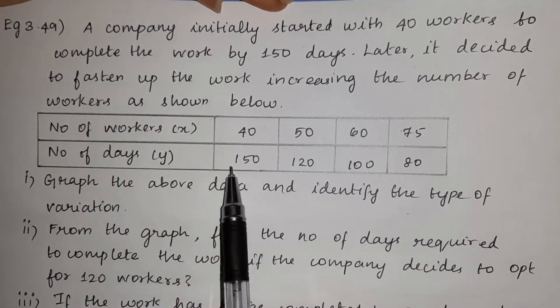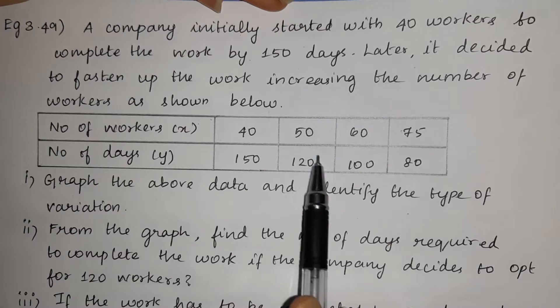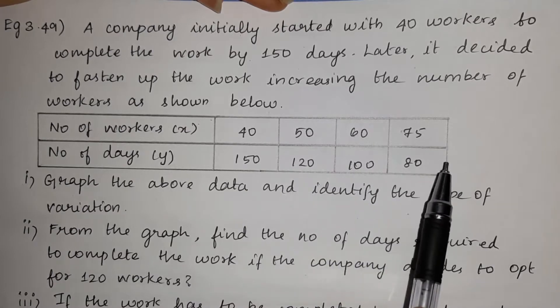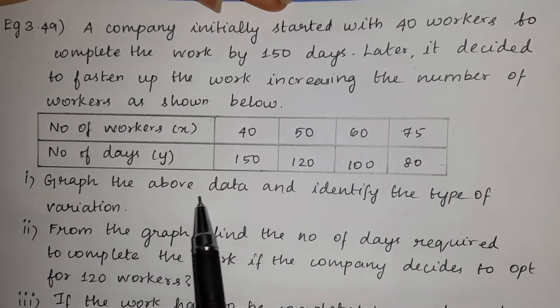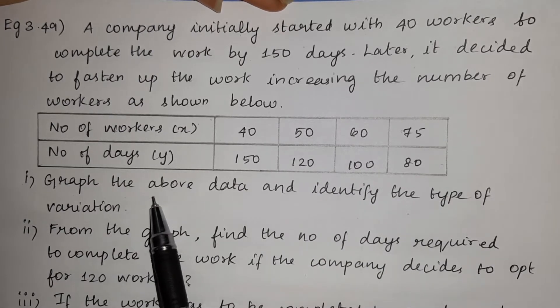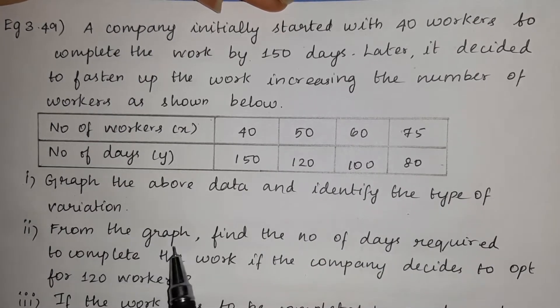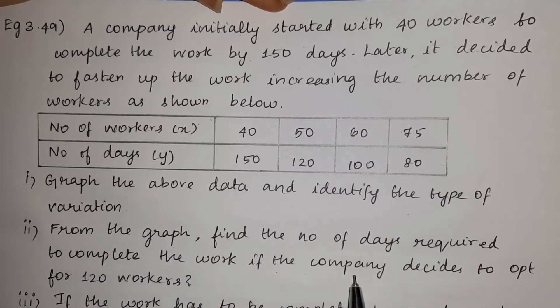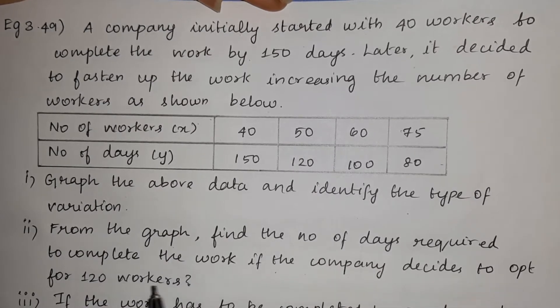Number of days: 150, 120, 100, 80. Graph the above data and identify the type of variation. From the graph, find the number of days required to complete the work if the company decides to opt for 120 workers.